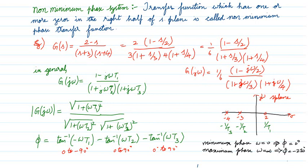Consider (2 − s) / [(s+3)(s+4)]. The zero is at s = 2, which is in the right side. The poles at s = −3 and s = −4 are in the left side. Writing in standard form and replacing 1/2 with T1, 1/3 with T2, 1/4 with T3, this is the general form of a non-minimum phase system.